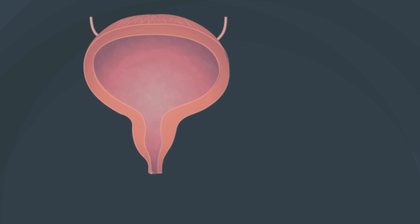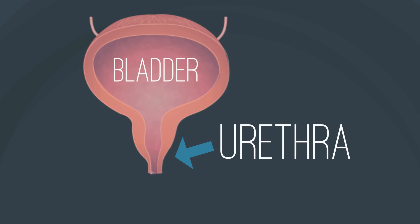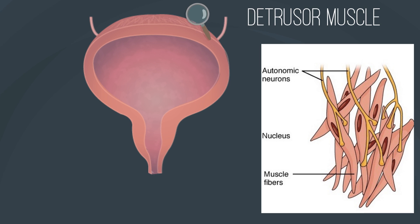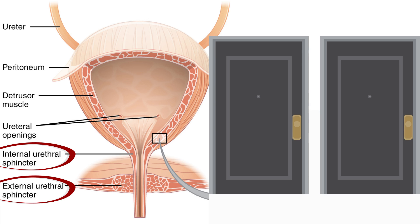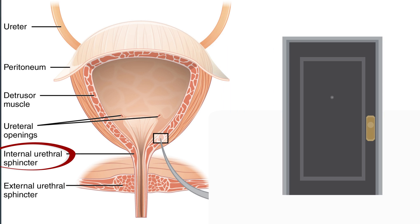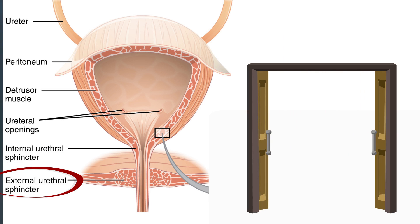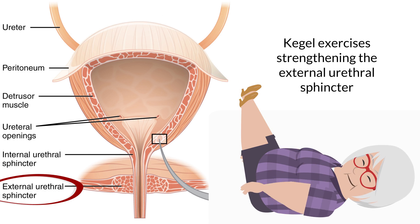The lower urinary tract comprises the bladder and the urethra, the two functional units involved in storage and elimination of urine. The bundles of intertwining smooth muscle fibers that line the bladder wall form the detrusor muscle, the contractile smooth muscle of the bladder. The internal and external urethral sphincters are basically two doors that hold in the urine. The internal urethral sphincter is made up of smooth muscle under involuntary control. After the bladder is about half full, the external urethral sphincter muscle is activated — made up of skeletal muscle under voluntary control. When you do Kegel exercises, this external urethral sphincter muscle contracts and is tightened.